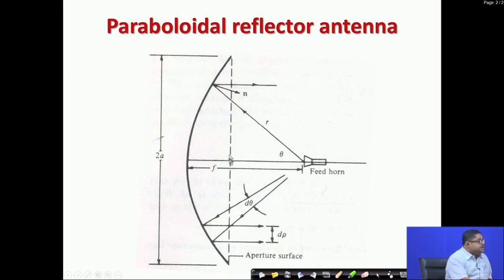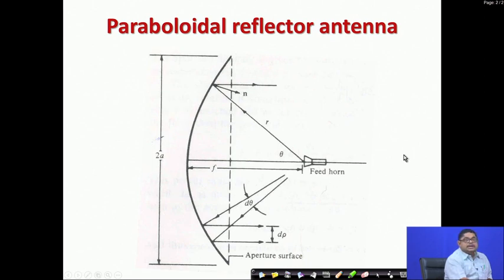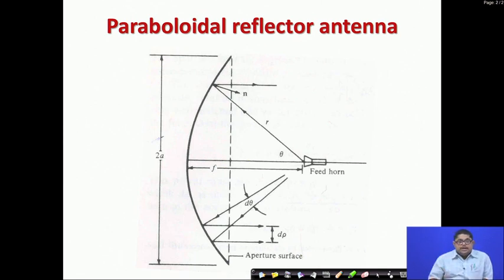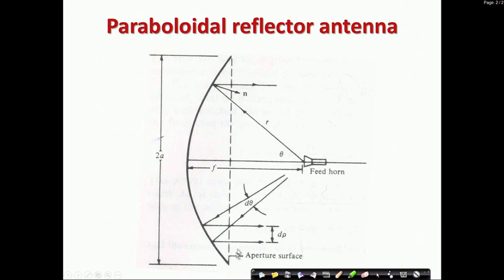The diameter of this aperture is 2a, or radius is a. An important ratio is f/2a or f/d — the f/D ratio. This is a specification for a parabola because it determines all its radiation properties. We first need to find the aperture field distribution; if we know the field distribution on this aperture, we can find the far field by the Fourier transform method.